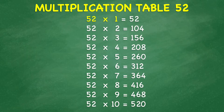52 times 1 equals 52. 52 times 2 equals 104. 52 times 3 equals 156. 52 times 4 equals 208.